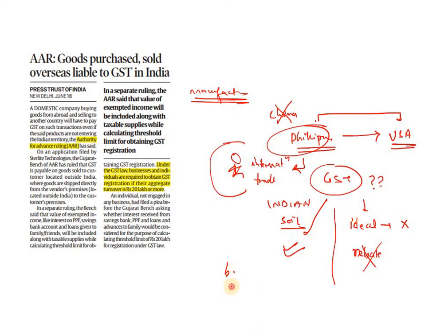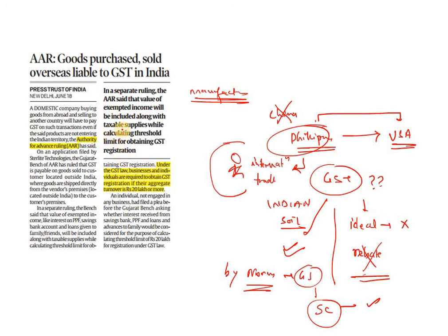By standard norm, if this question comes in your exam, the answer is that GST is not payable in such cases. This ruling is currently being challenged in Gujarat court, and when it goes to the Supreme Court, it will likely be decided in favor of the vendor. The AAR said the value of exempted income will be included along with taxable supplies while calculating the threshold limit for obtaining GST registration. Importantly, under GST law, businesses and individuals are required to obtain GST registration if their aggregate turnover is above ₹20 lakh.